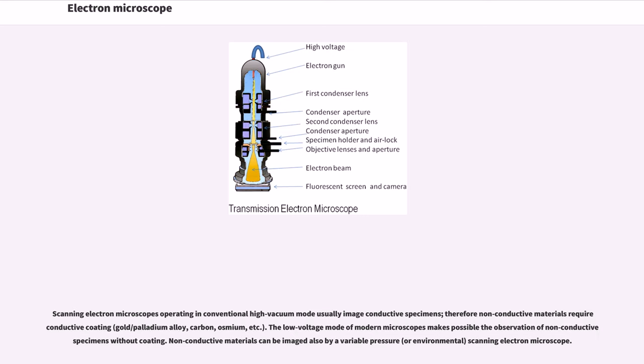Scanning electron microscopes operating in conventional high vacuum mode usually image conductive specimens, therefore non-conductive materials require conductive coating, gold-palladium alloy, carbon, osmium, etc. The low voltage mode of modern microscopes makes possible the observation of non-conductive specimens without coating. Non-conductive materials can be imaged also by a variable pressure, or environmental, scanning electron microscope.